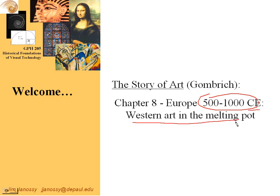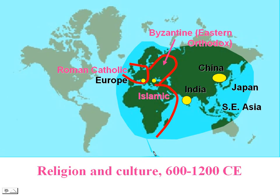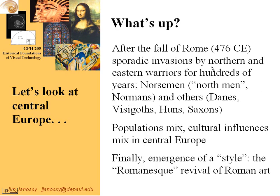Western Art in the Melting Pot. What's happening at this point in Europe is that the Roman Empire has fallen apart and invasions are coming in from the north and from the east. From around 500 to 1000 in this area, it's an area of turmoil. Invasions came from the north and the east.